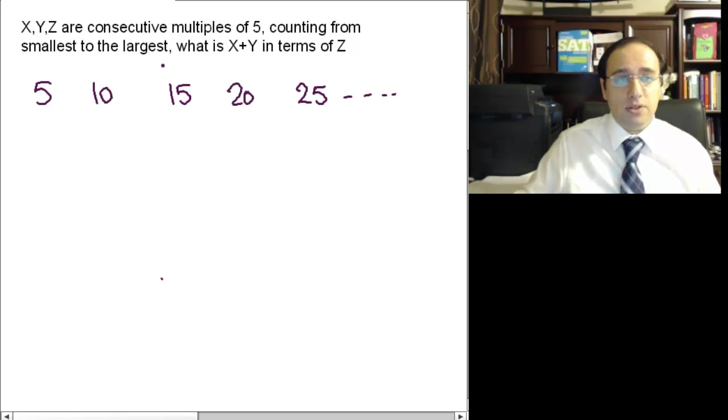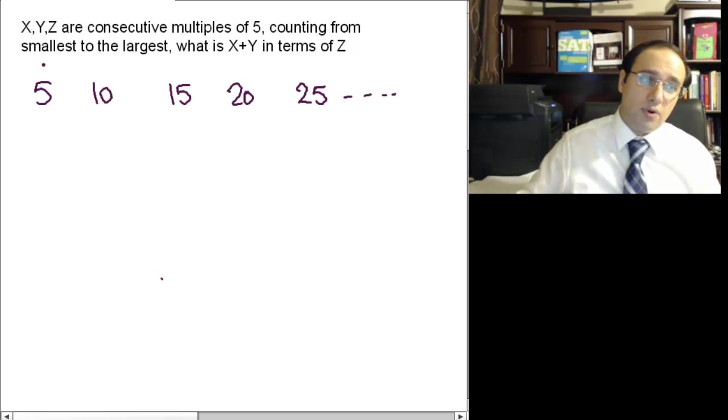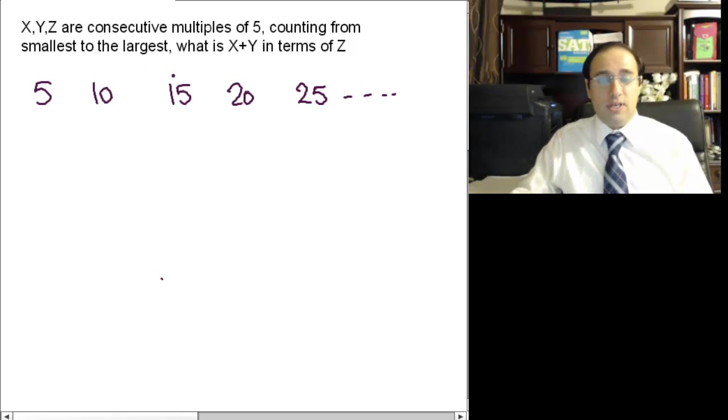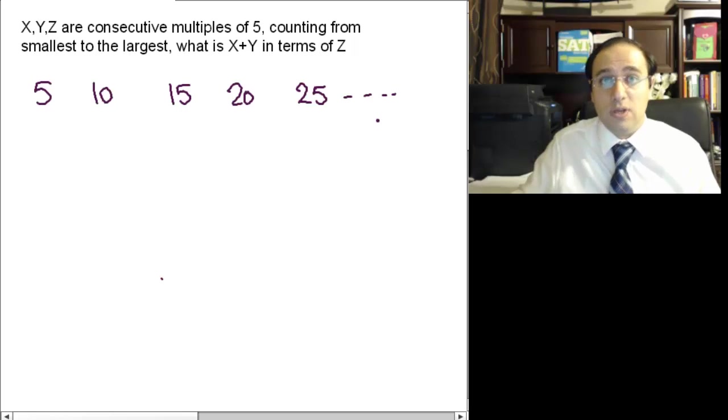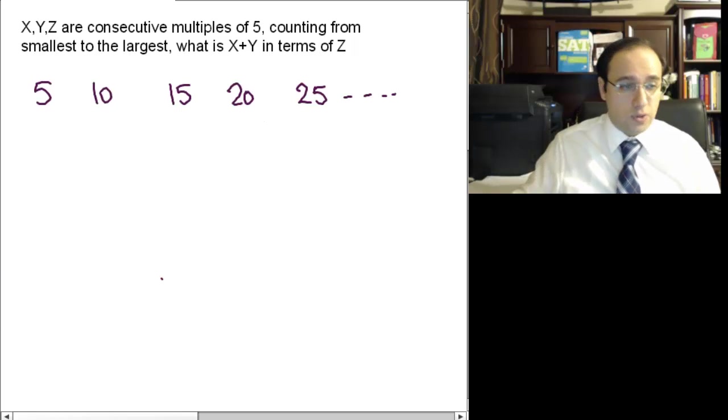From smallest to largest, what is X plus Y in terms of Z? So the first number is X, the second is Y, the third is Z, and so on. It could be any three numbers, any three consecutive multiples of 5. I'll just choose the first three to make it easier.